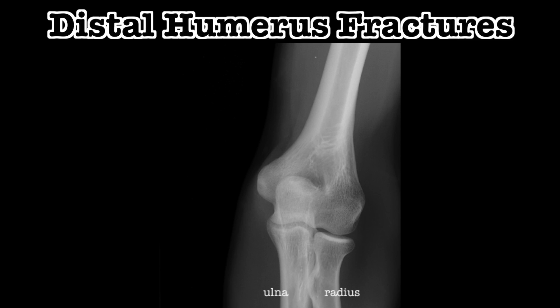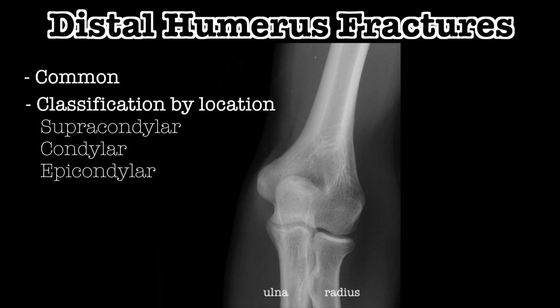Now that we've covered some basic anatomy, let's have a look at the types of elbow fractures. Distal humerus fractures are common and classified according to their location with respect to the epicondyles. Supracondylar fractures are the most common type and will be the focus of this video.